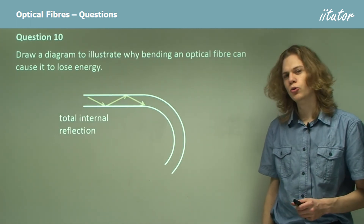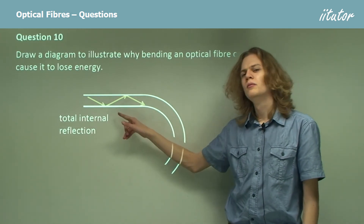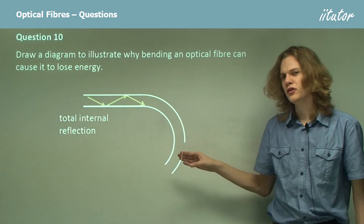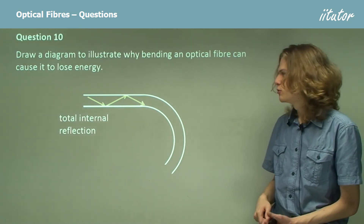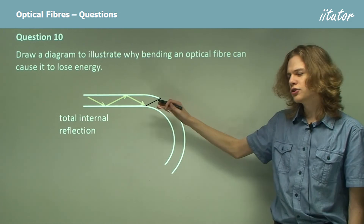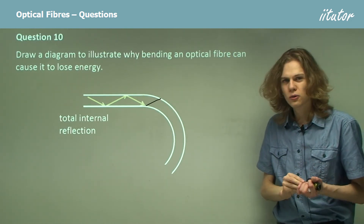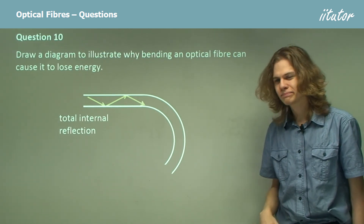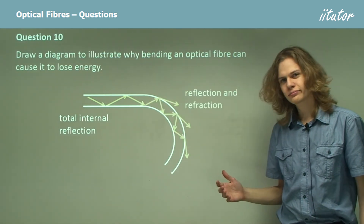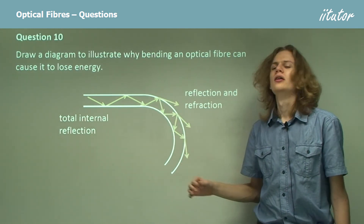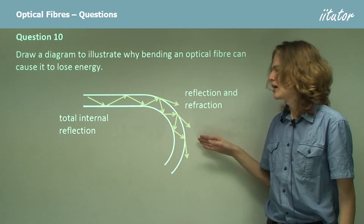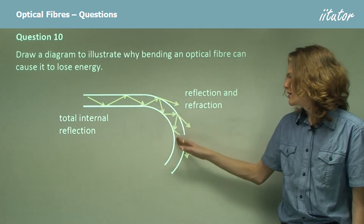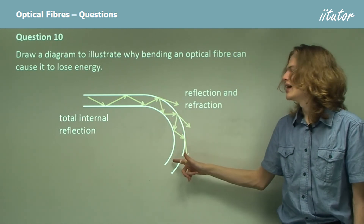At the straight section, total internal reflection occurs — the light tries to pass into the cladding but cannot, because it reaches the boundary at an angle larger than the critical angle. But at the bend, we continue with total internal reflection until suddenly the light tries to pass into the cladding at a very small angle. This means that instead of total internal reflection, we simply get refraction, bending away from the normal. We get a little reflection each time, but more importantly we get refraction, which means we're losing energy. Because the same proportion of energy is lost each time, the energy inside the optical fiber decreases continuously.